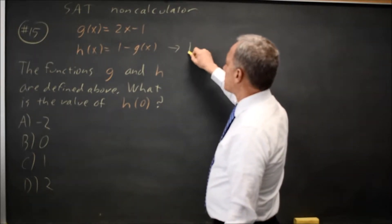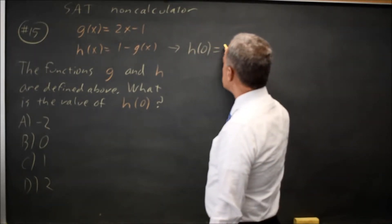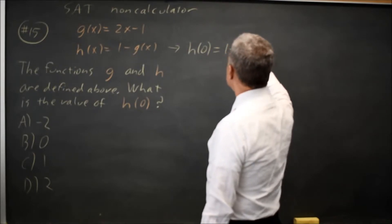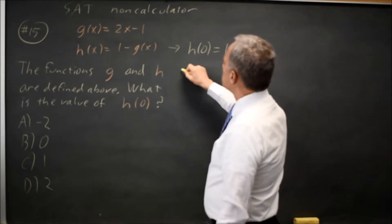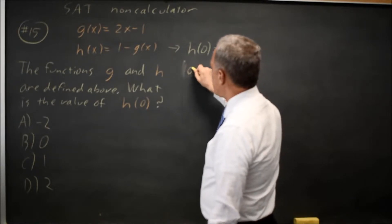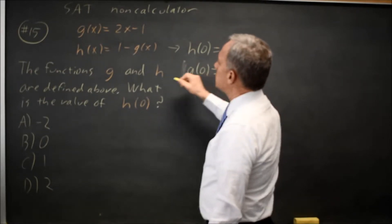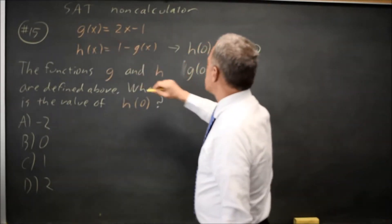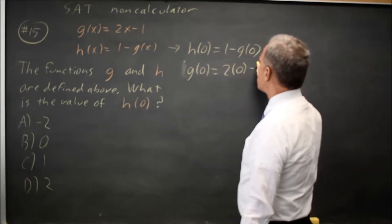Substituting in 0 for x, I get h of 0 equals 1 minus g of 0. Substituting in 0 for x, I get g of 0. If g says whatever is in the parenthesis, I take twice that number and subtract 1.